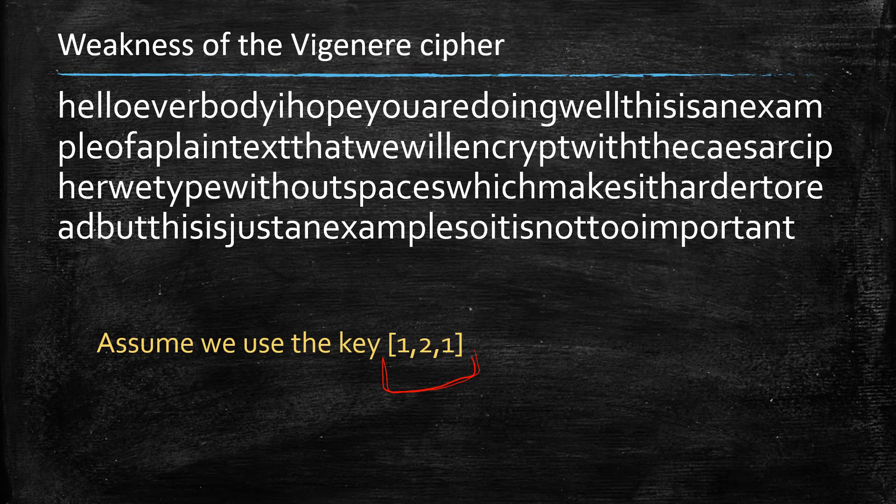So one, two, one. And how—assume we don't know that and we're trying to do the cryptanalysis of the Vigenere cipher in this case. Now what we're going to do is we're going to split, we're going to take every third letter.